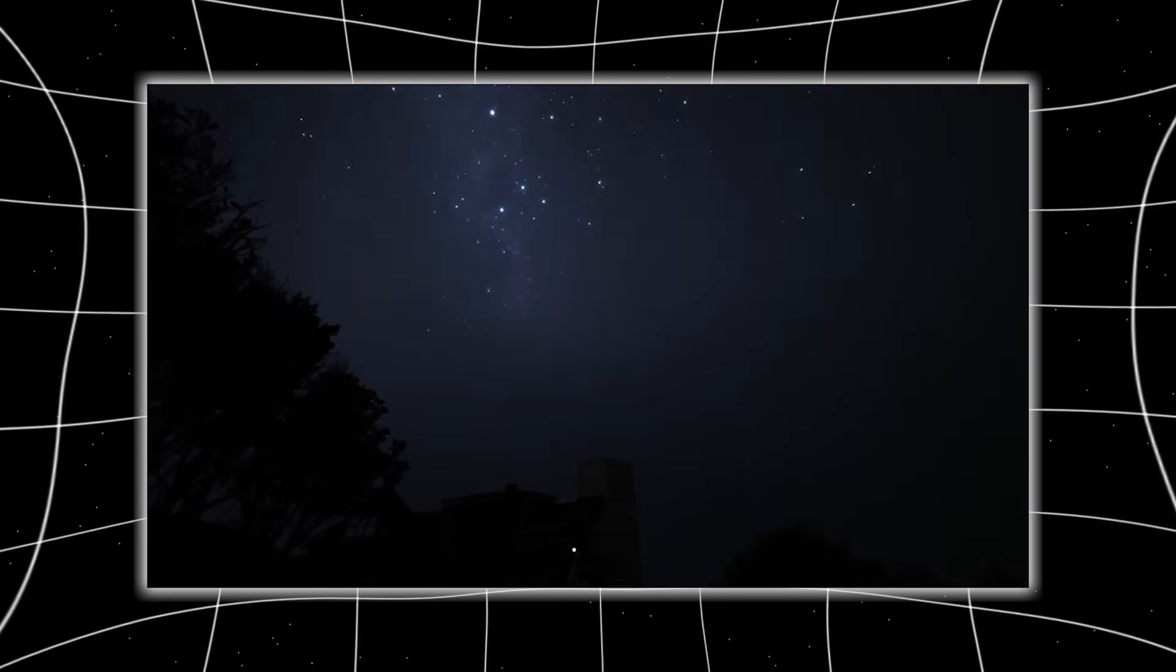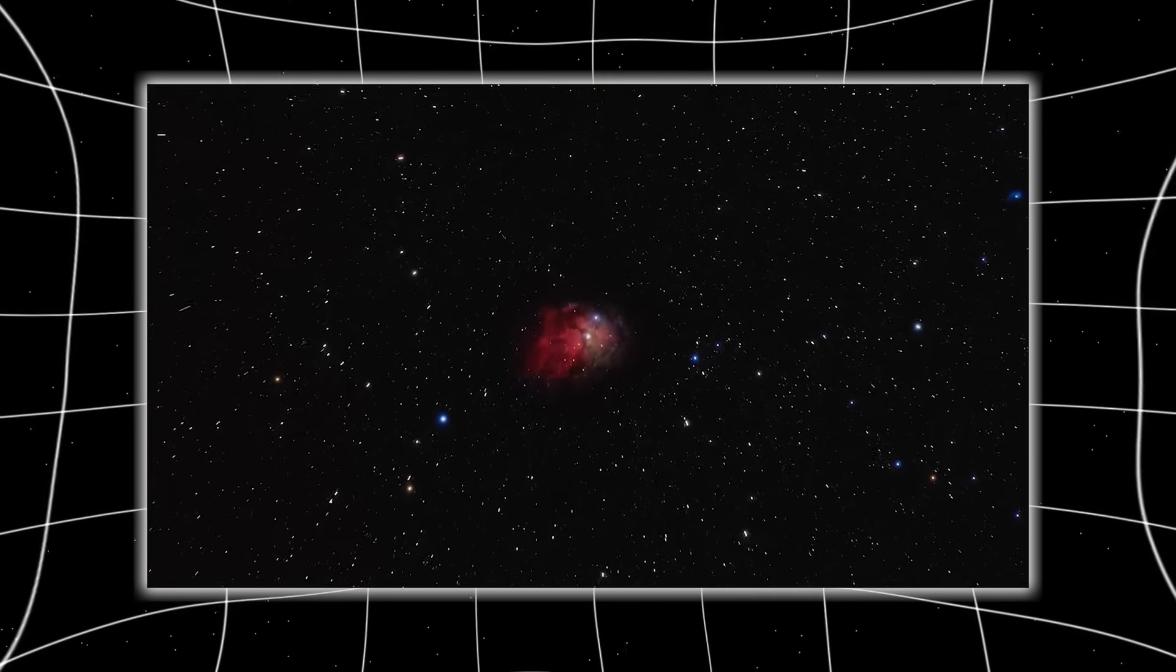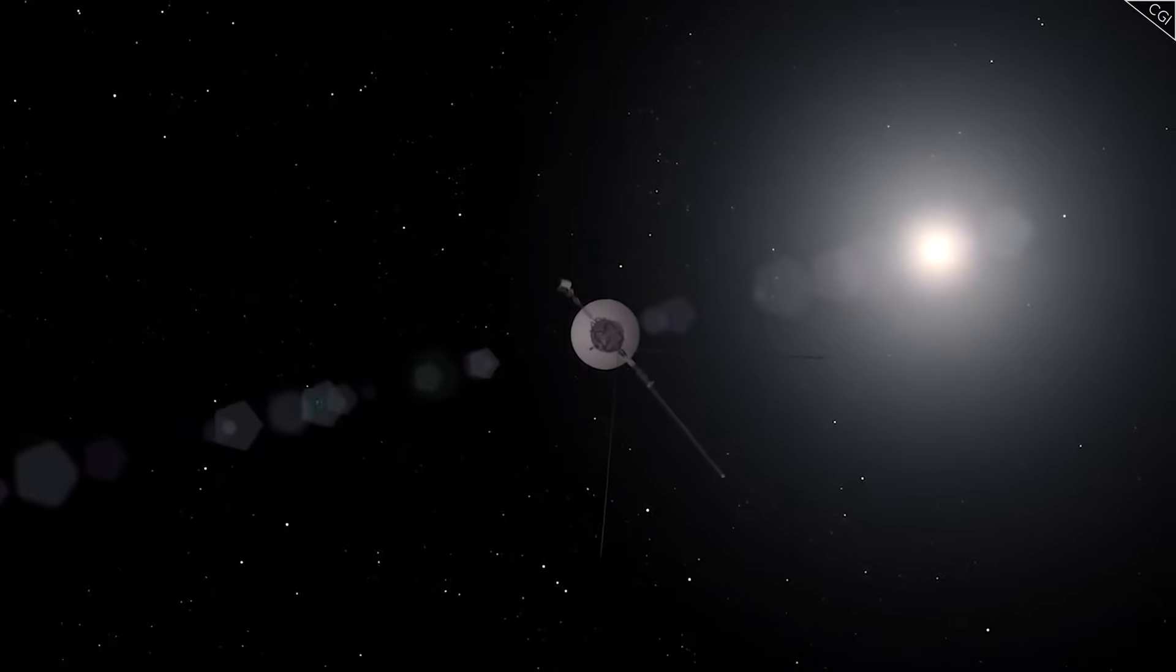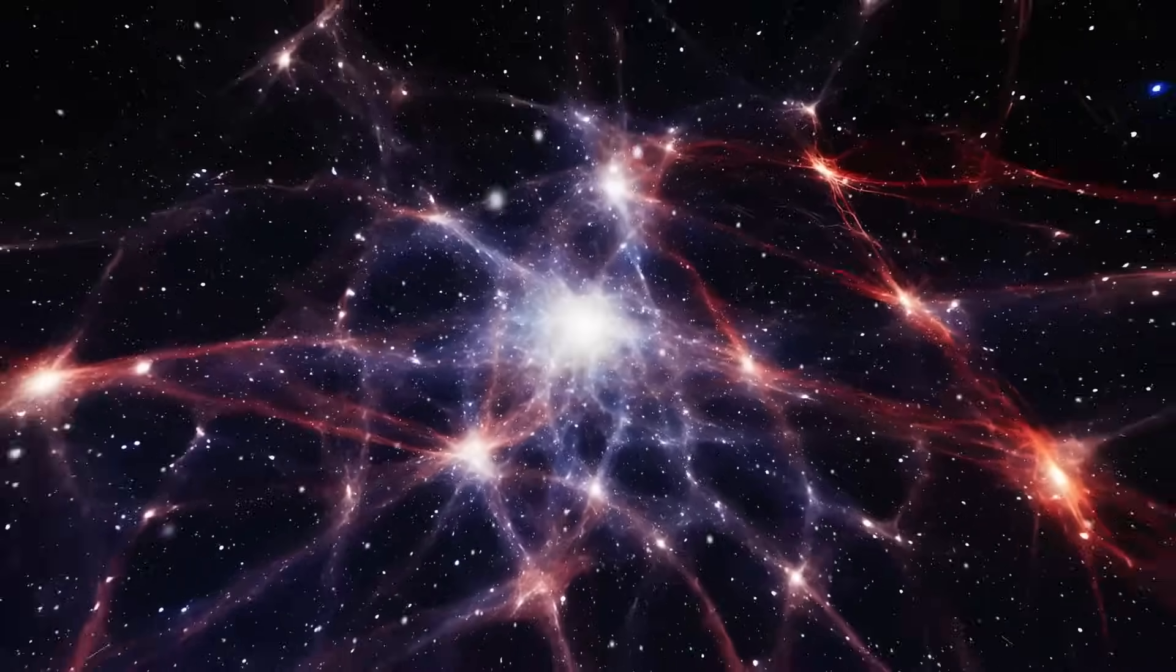One physicist described it as a bridge, but one that only becomes real once you cross it. But cross into where, or what? If Voyager had triggered something, had opened that bridge, was it still on our side of it? Or had it already left us behind?